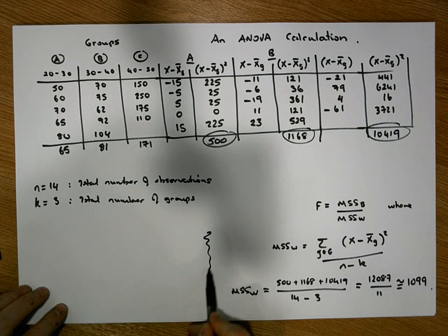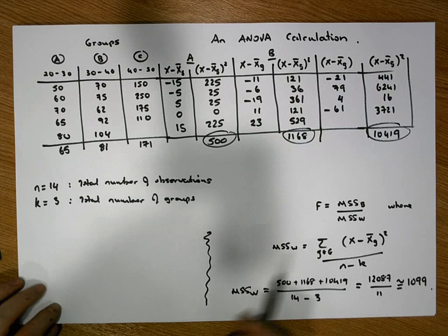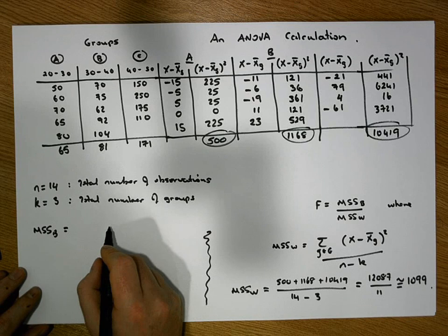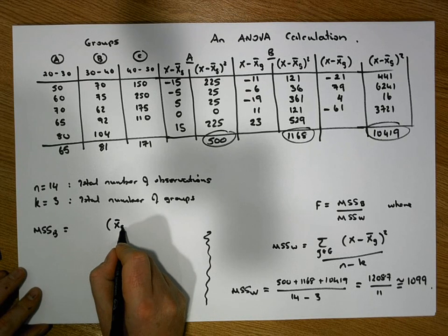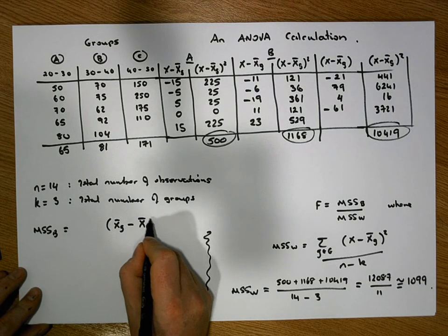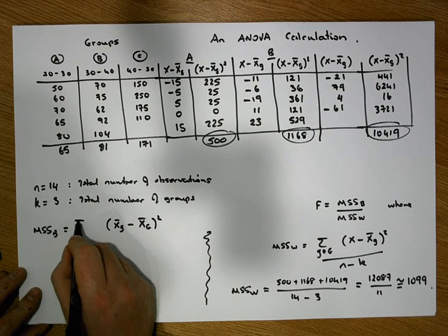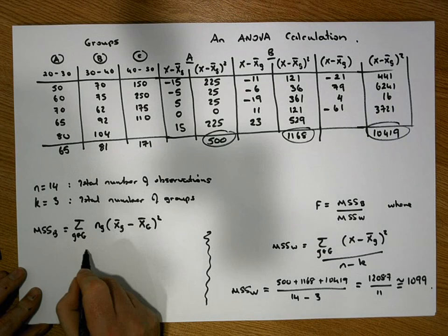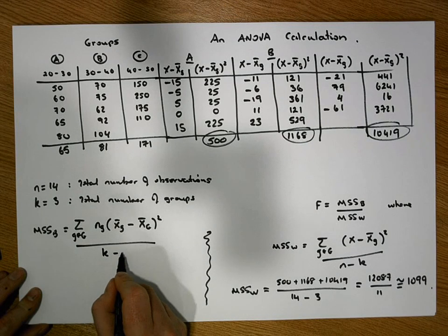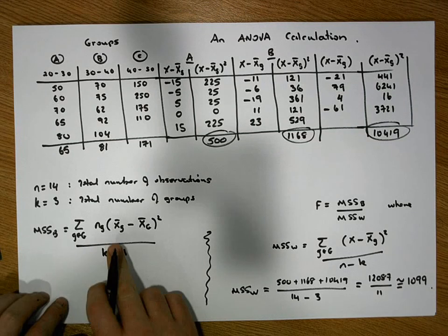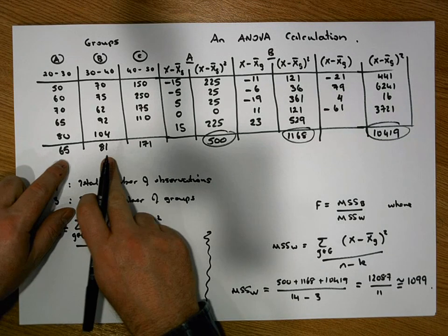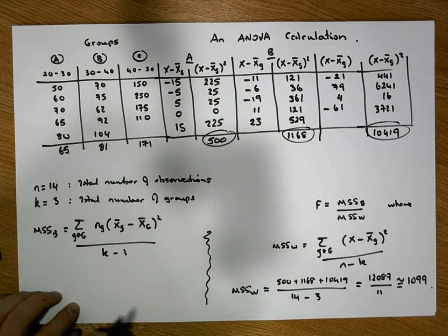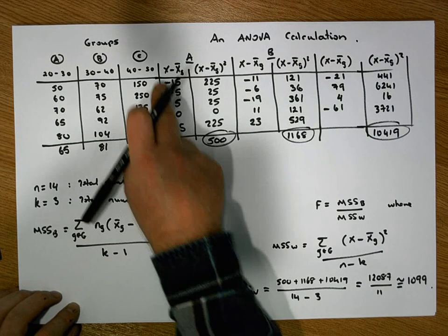The next piece to calculate is the mean sum of squares between. This is defined as the squared distance that each group mean is away from a global mean, weighted by group sizes, averaged over the number of groups minus one. We know each individual group mean, so we now need to calculate a global mean by pooling all values together and calculating the average.